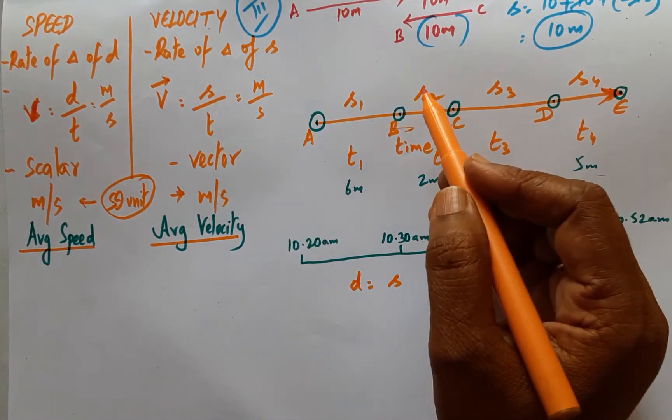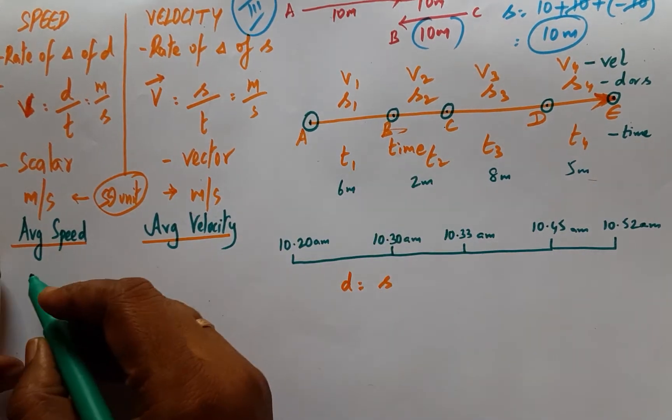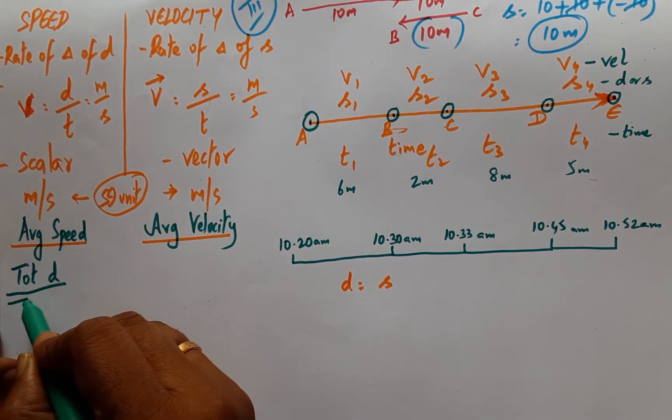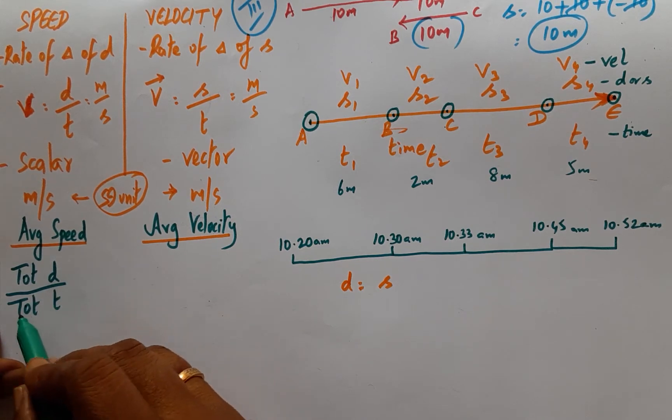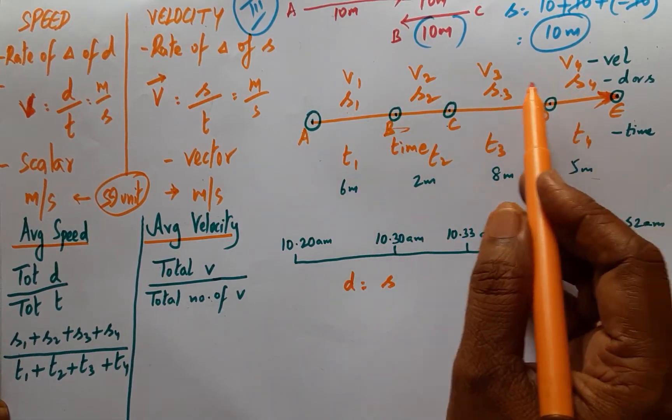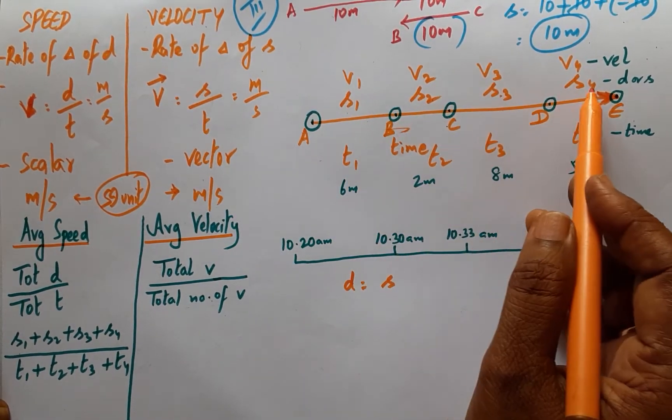The velocities are here. The average speed will be total distance travelled by total time taken, which is nothing but here the total distance, which is represented as S1, S2, S3, S4.